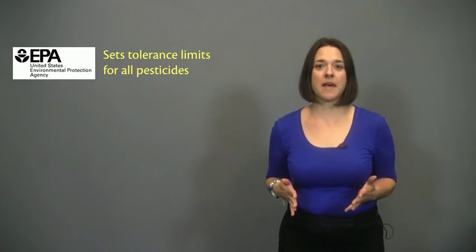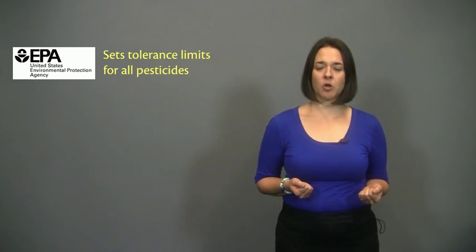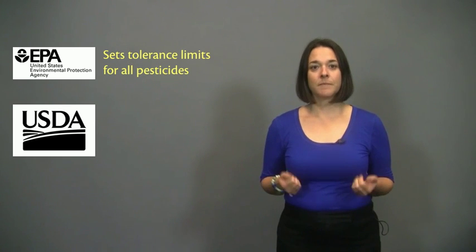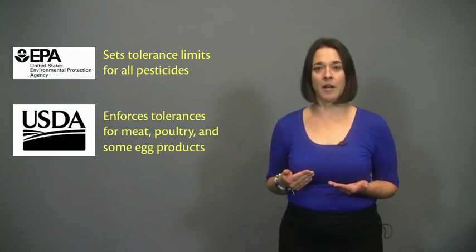As I explained earlier, EPA sets the tolerance limits for each pesticide that may be found on food or feed. The U.S. Department of Agriculture, USDA, enforces tolerances for meat, poultry, and some egg products.